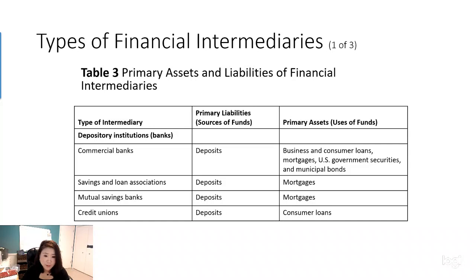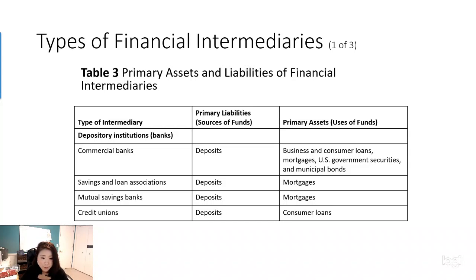What's the characteristic of the depository institutions? We refer to this kind of institution as banks throughout this text. They are financial intermediaries that accept deposits from individuals and institutions and make loans — they gather money from people who have extra money and lend it out to people who need money. Generally speaking, we have four different kinds of depository institutions.